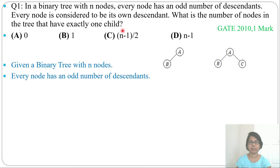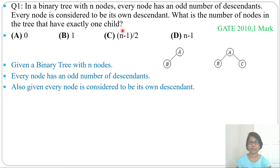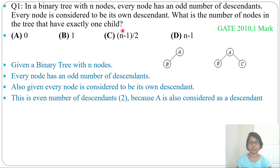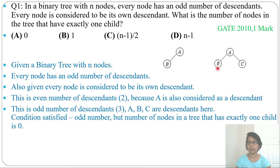Given: a binary tree with N nodes, every node has an odd number of descendants, and every node is considered to be its own descendant. Now look at this diagram. Here, node A has two descendants — B (its child) plus A itself — so that is an even number of descendants, not odd. Now see this other example: here A has three descendants — B, C, and A itself — so that is an odd number of descendants.